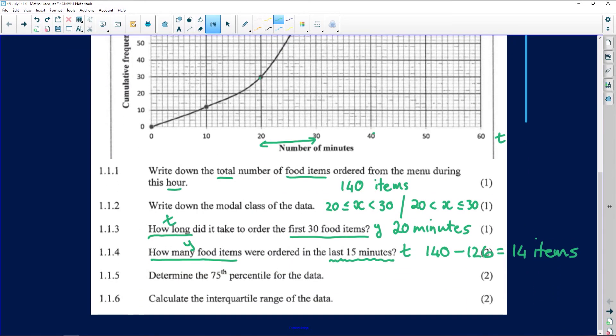Okay, now the catch there was the last 15 minutes. So you've got to go to the end and come back 15 minutes. Go vertical because the time was given. You're wanting a horizontal answer. You want to know how many items was sold. Okay, the second last question, determine the 75th percentile for this data.